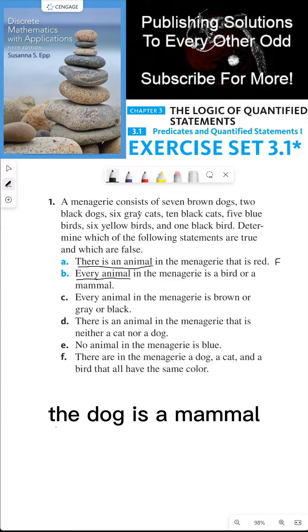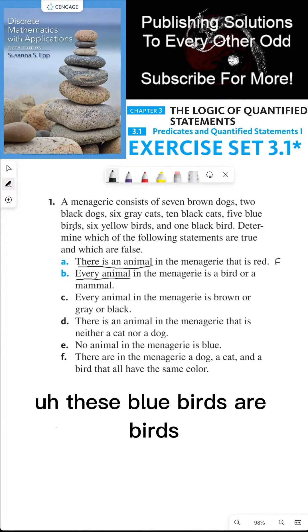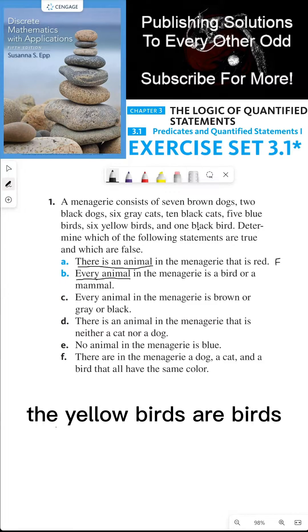With the two black dogs, the dog is a mammal. The six gray cats, cat's a mammal. These blue birds are birds. The yellow birds are birds. And the black bird is a bird. So yes, this is true.